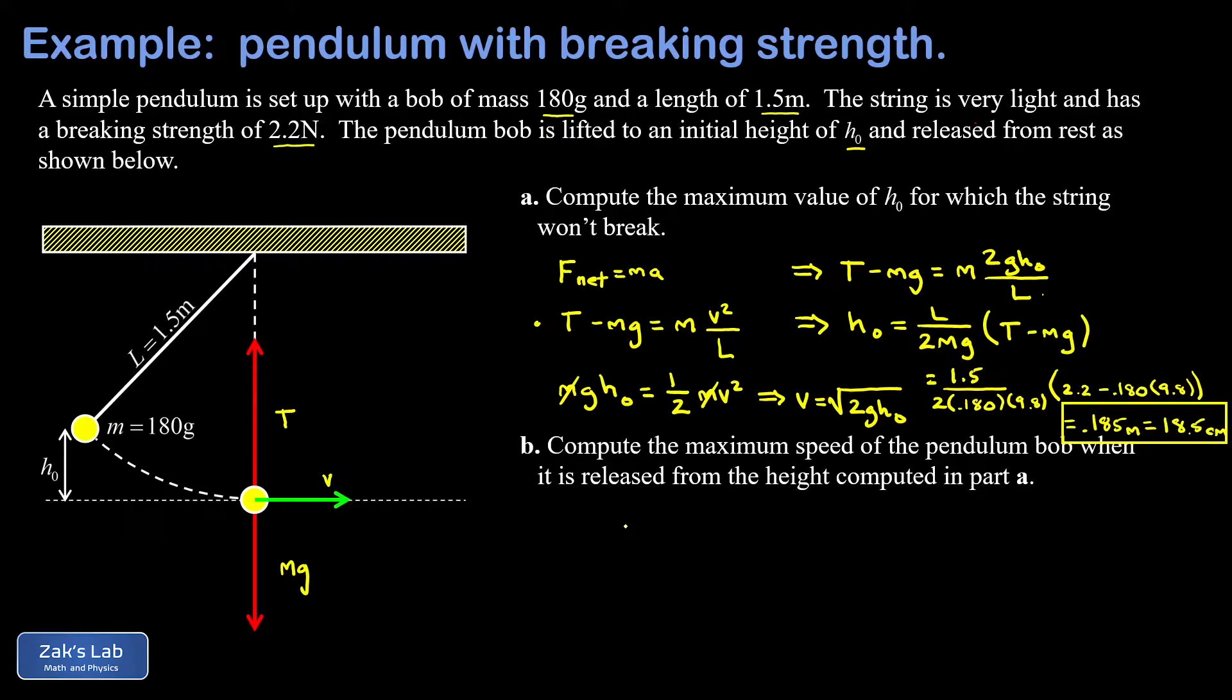In part B, we're asked to compute the maximum speed of the pendulum bob when it's released from the height we computed in part A. Well, we already figured out how the speed depends on the initial height. That's the square root of 2g h naught. So we just plug the numbers in, and we obtain a maximum speed of 1.90 meters per second.